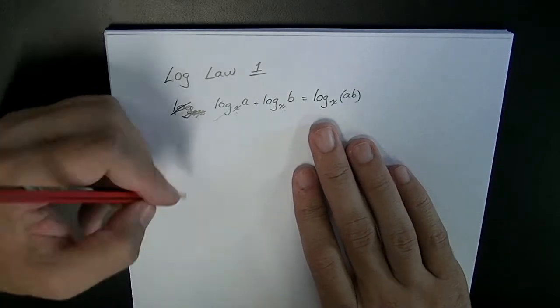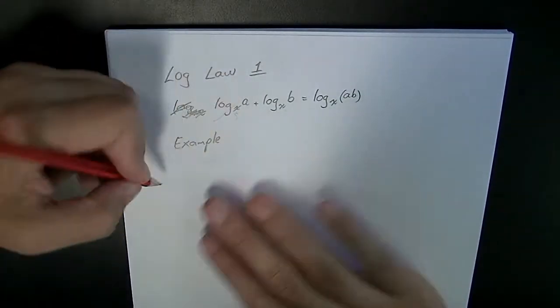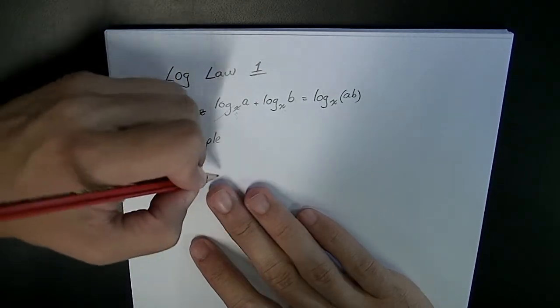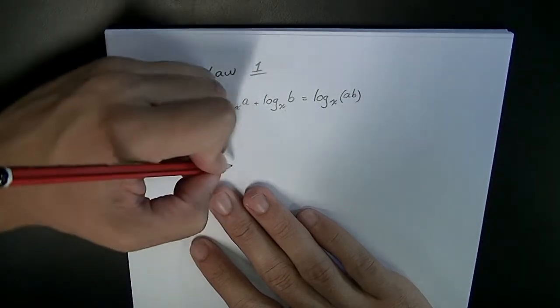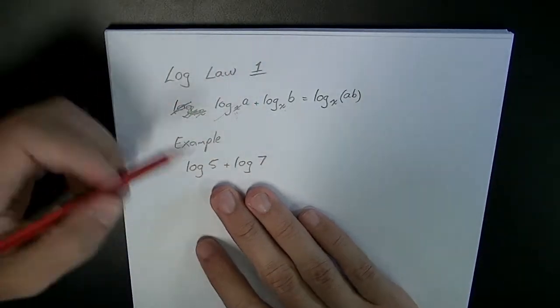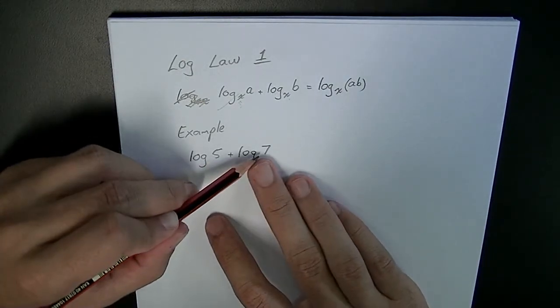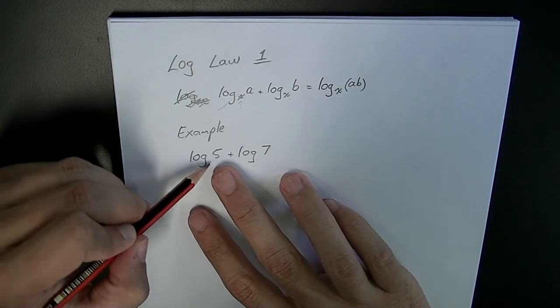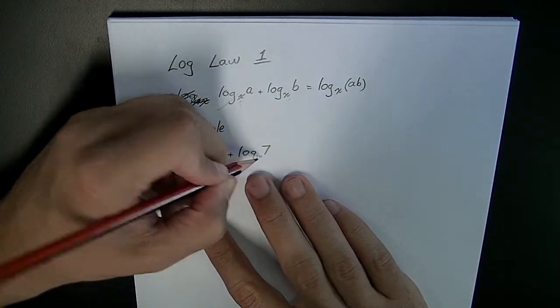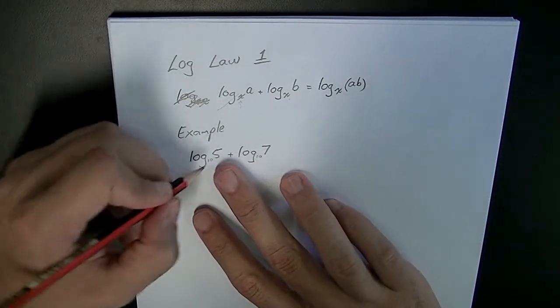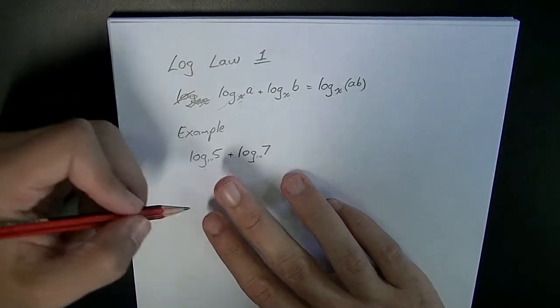Now a quick example of this might be something like log 5 plus log 7. Now you can see that I'm not writing any bases here. If you just write the word log and you don't put a base in, it's assumed that the base is 10. 10's a really useful base when it comes to logs. So if no one writes a base in there at all, it just says the word log, that means log base 10.